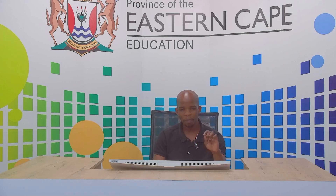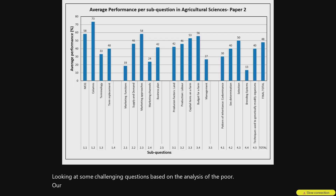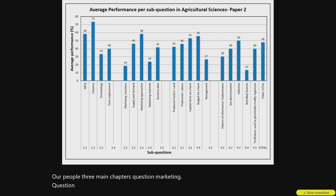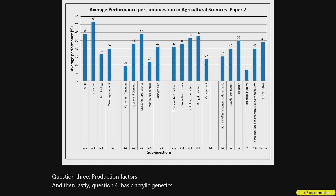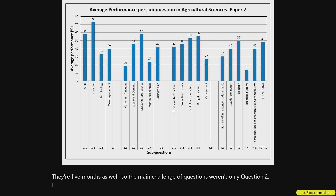Our Paper 2 has got three main chapters. Question 2 is Agrik Marketing, 35 marks. Question 3 is Production Factors, 35 marks. And then lastly, Question 4 is Basic Agrik Genetics, 35 marks as well. The main challenging questions were on Question 2, Question 3 — only one question — and then on Question 4 as well.